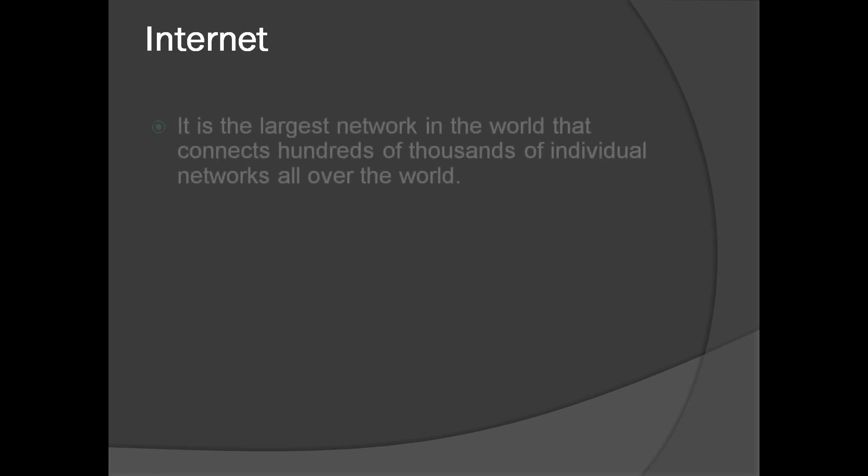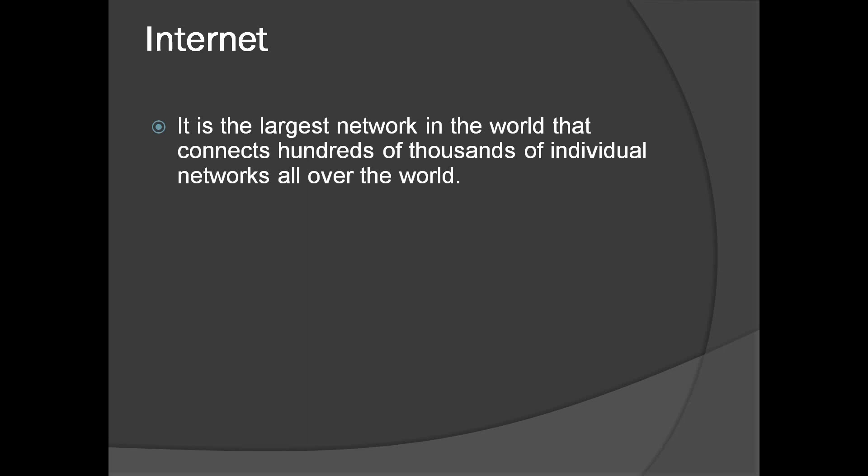Let's start first with the definition of the internet. By definition, it is the largest network in the world that connects hundreds of thousands of individual networks all over the world. Basically, the internet is an infrastructure which connects different web servers and networks all over the world. If you want to build your own website, you are connecting it to the internet infrastructure, and every web server that you visit is connected to an internet infrastructure.